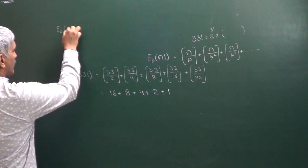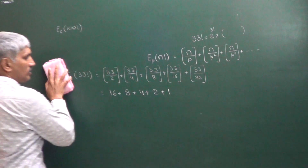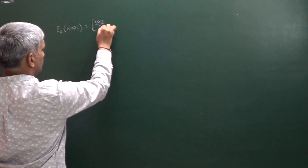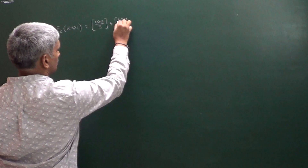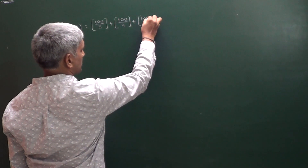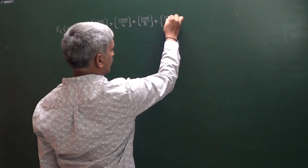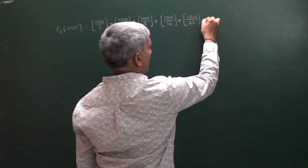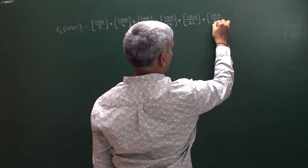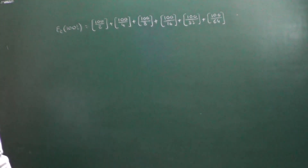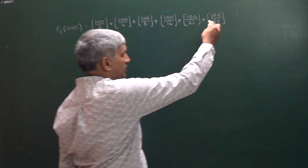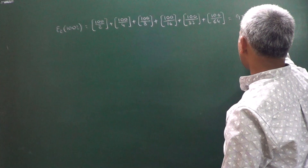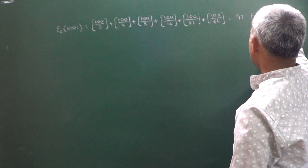Now suppose I want to find the exponent of 2 in 100 factorial. Using the same formula: floor(100/2) + floor(100/4) + floor(100/8) + floor(100/16) + floor(100/32) + floor(100/64). We do not need to proceed further since the next term gives 0. Simplifying this summation, the exponent of 2 in 100 factorial is equal to 97.